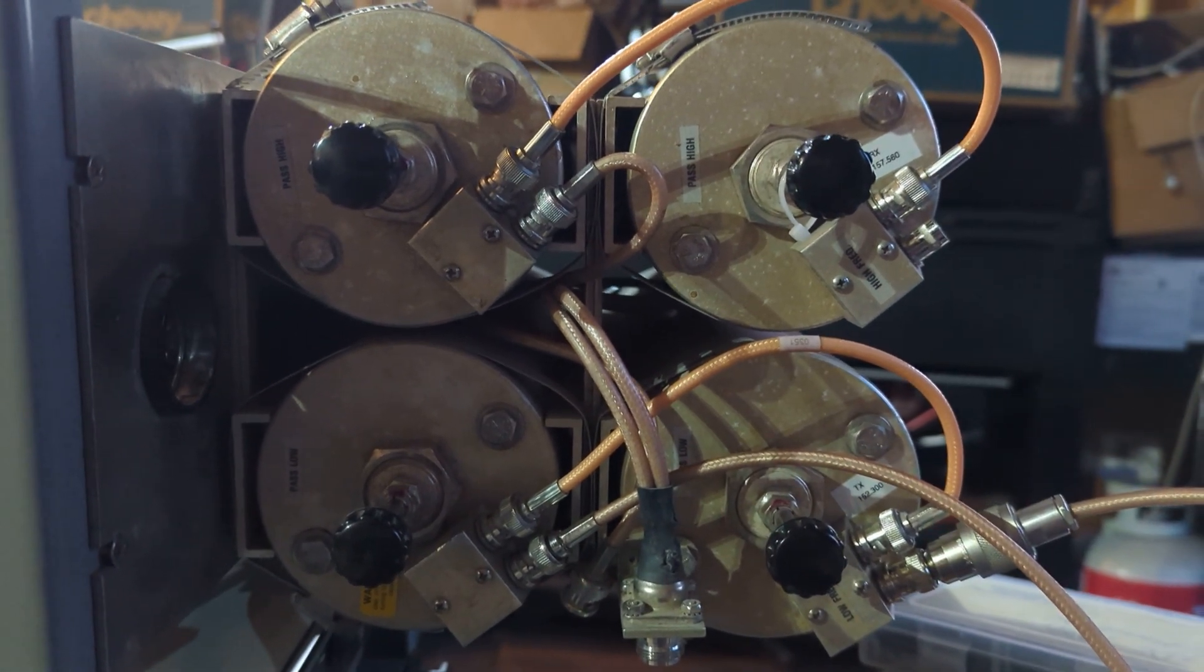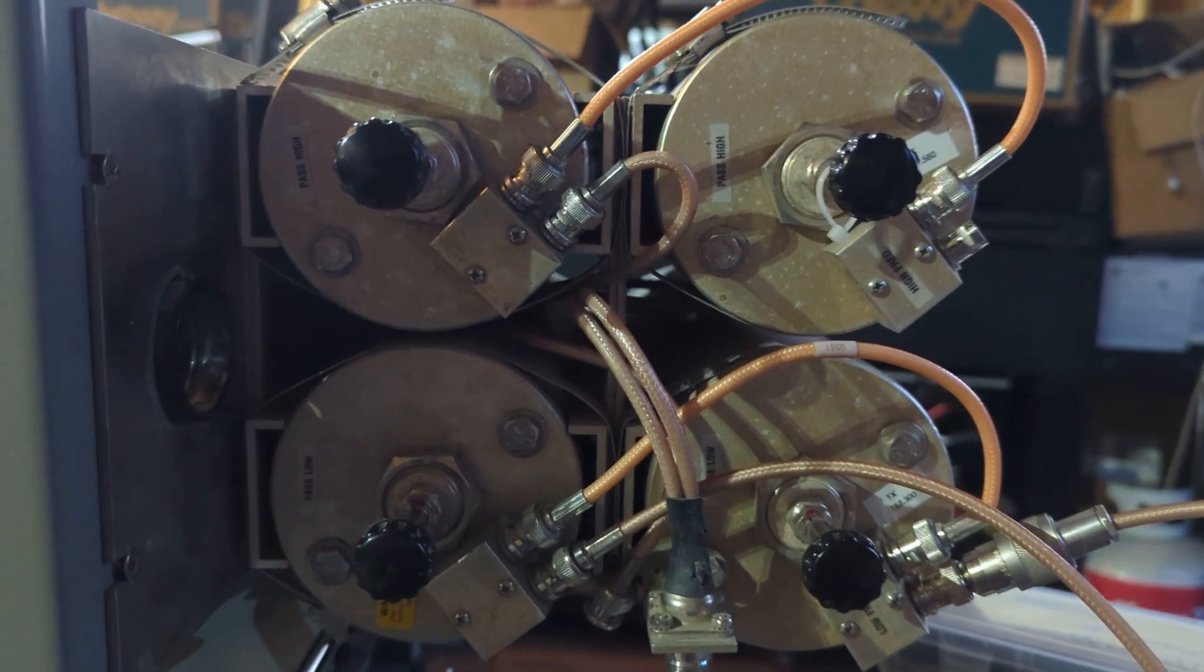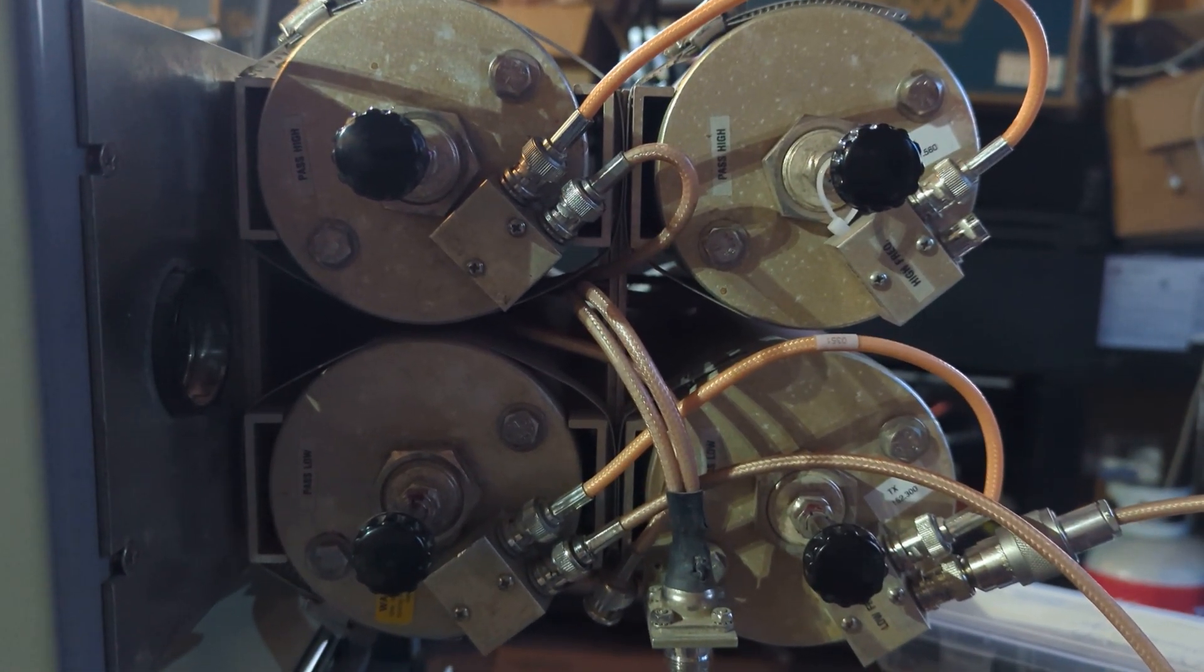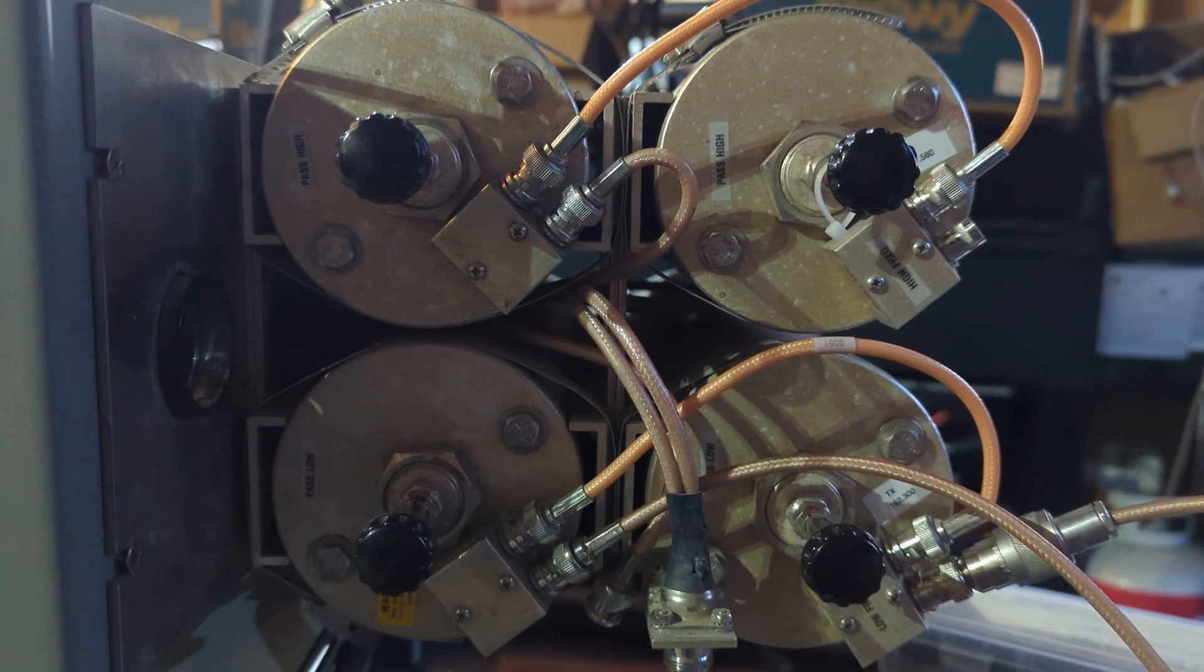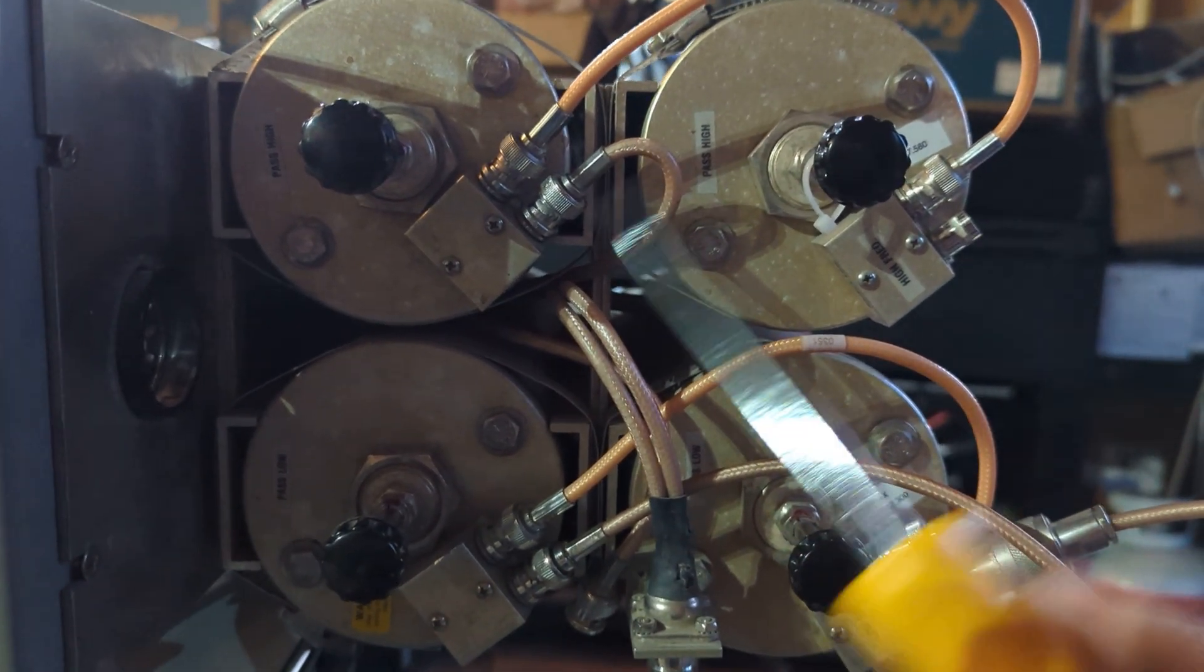Today we're going to be talking about band pass and notching of a duplexer. There's two types of duplexers out there. There is what they call a notch duplexer and there's what they call a band pass duplexer. They usually have notch type devices in there. That's what we're going to talk about here.